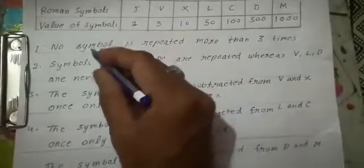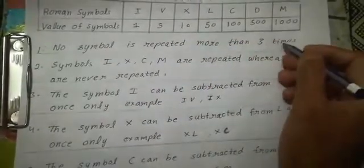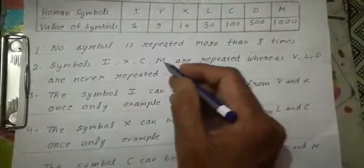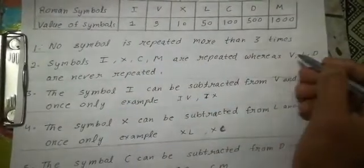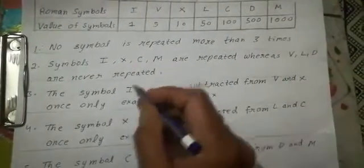Points to remember: No symbol is repeated more than 3 times. Symbols I, X, C, and M can be repeated, whereas V, L, and D are never repeated.